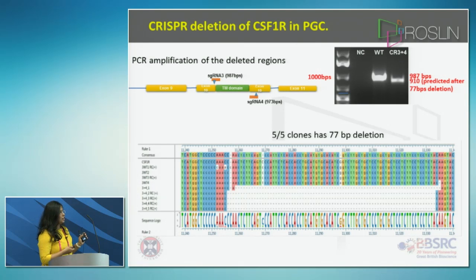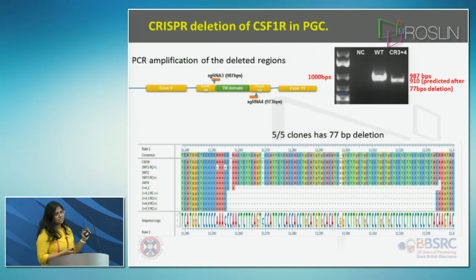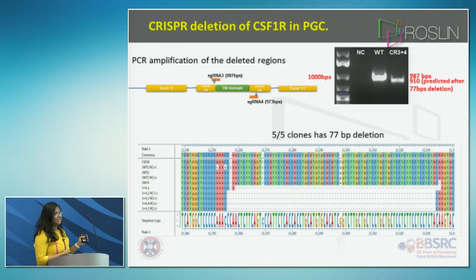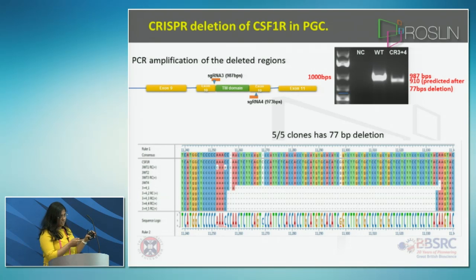I was happy to find that all five of my clones showed a 77 base pair deletion, meaning the deletion was successful. What we expect from this deletion is the possible formation of a dominant truncated protein of the receptor, though we don't know whether it will be truncated or whether protein formation will simply stop.